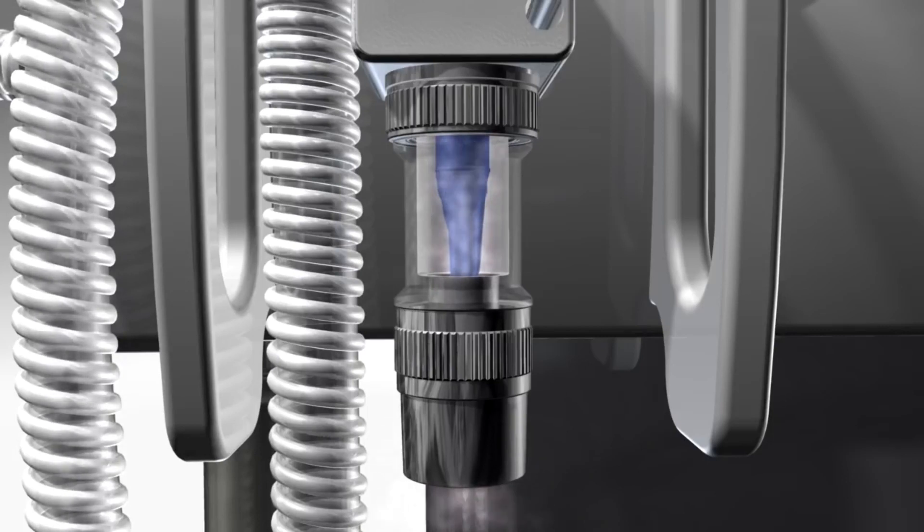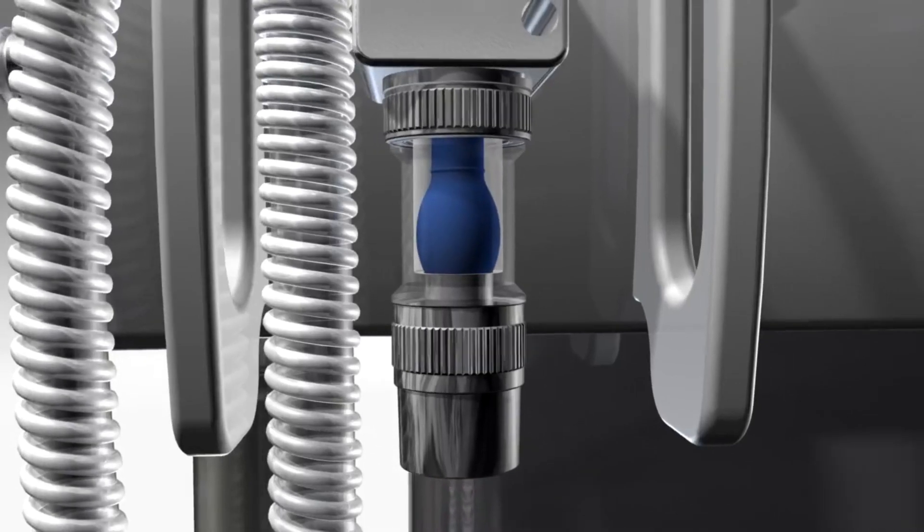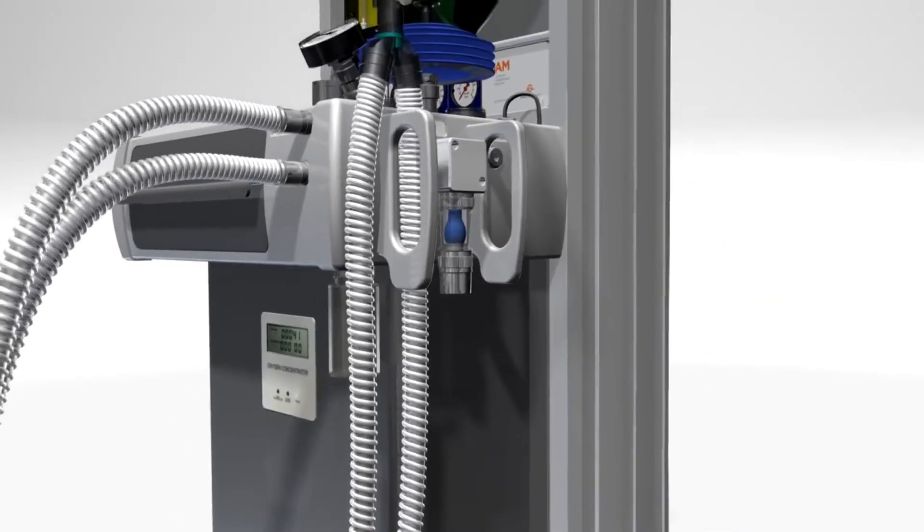Scavenging may be active (suction applied) or passive (waste gases proceed passively down corrugated tubing through the room ventilation exhaust grill of the OR).